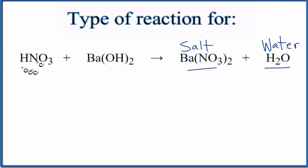If I look at the reactants I see I have HNO3, nitric acid. So that's going to be an acid, and I can tell it's going to be an acid because I have this H in front. That's usually a clue that you have an acid.